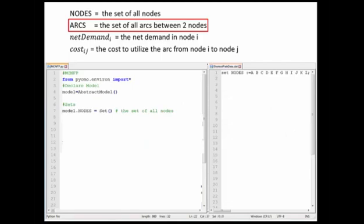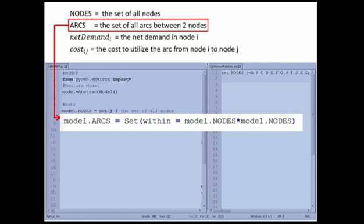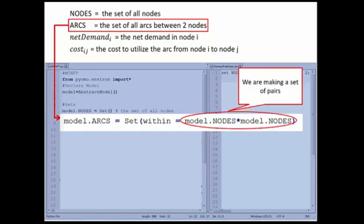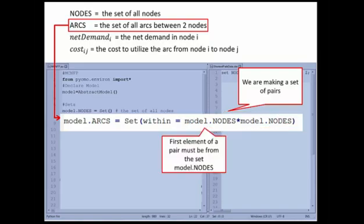So in POMO, that would look like something like this, where we'd say model.arc equals set. And then in our set function, we would say within equals model.nodes cross model.nodes. So let's take a closer look at that. This portion of this call, model.nodes cross model.nodes, is saying that we are making a set of pairs. And this first model.nodes is saying that the first element of our set has to be from the set model.nodes.